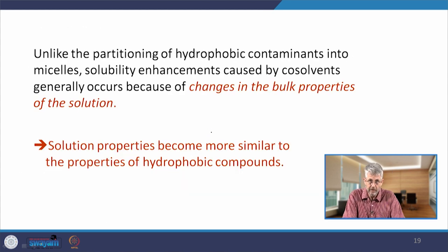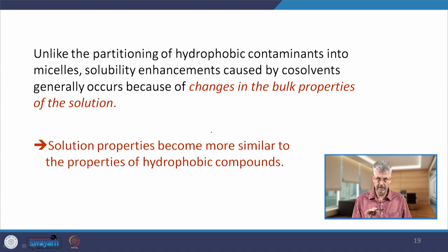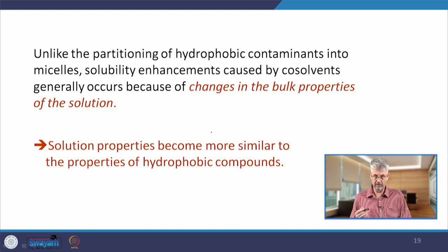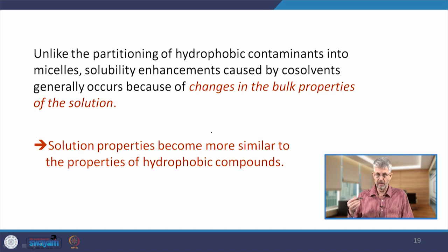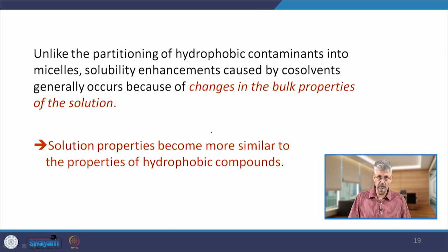The working of a co-solvent is different from surfactants in that the co-solvent actually changes the bulk properties of the solution. Surfactants were molecular additives that formed micelles. But when we mix a co-solvent, we basically change the bulk properties of the solution, making it more suitable for hydrophobic compounds. In other words, water with a co-solvent added becomes more like a hydrophobic solvent such as acetone, chloroform, or dichloromethane. The co-solvent makes the water more likely to dissolve hydrophobic compounds — this is what we call the co-solvency effect.